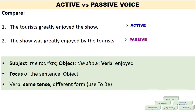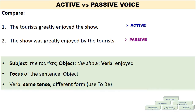The verb remains the same. The tense remains the same. However, we need a different form of the main verb. In using the passive voice, we have to use the verb 'to be.' Take a look at the second sentence again: The show was enjoyed. Because it's the past simple tense, we need the past form of the verb 'to be.'